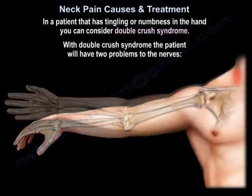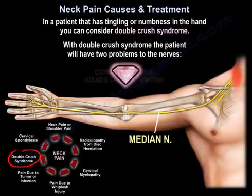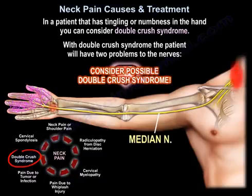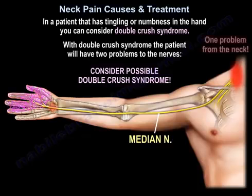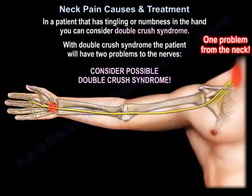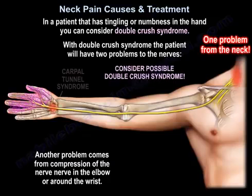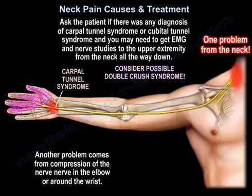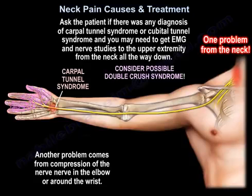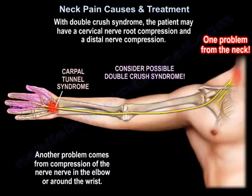In a patient with tingling or numbness in the hand, consider double crush syndrome — meaning the patient has two problems affecting the nerves. One problem comes from the neck, and another comes from compression of the nerves at the elbow, such as cubital tunnel syndrome, or at the wrist, such as carpal tunnel syndrome. Ask about any prior diagnosis of carpal tunnel or cubital tunnel syndrome, and you may need imaging and nerve studies of the upper extremity from the neck all the way down.